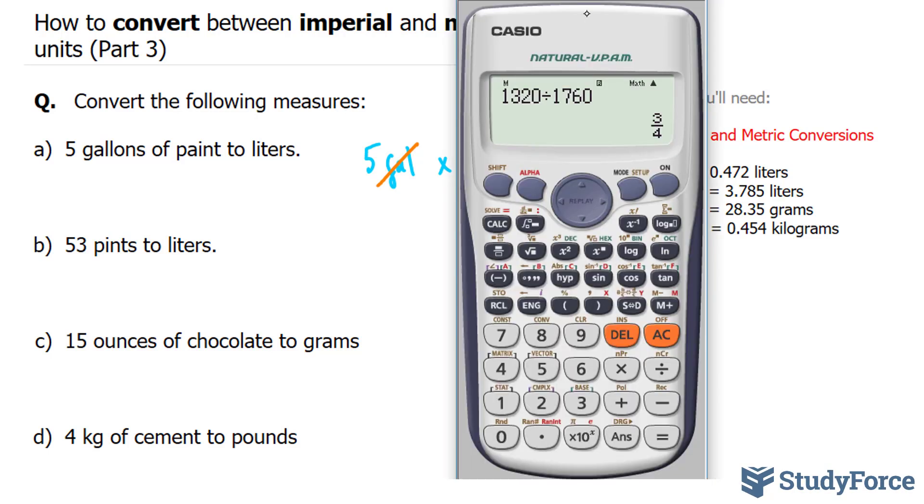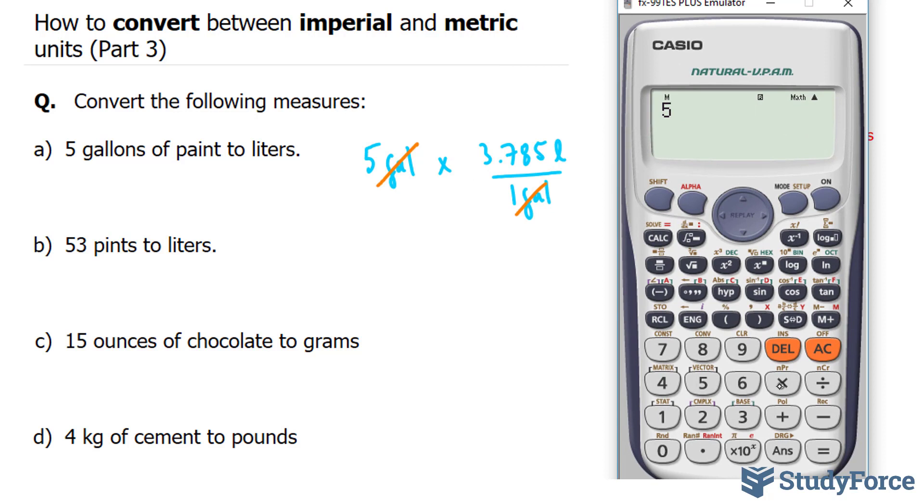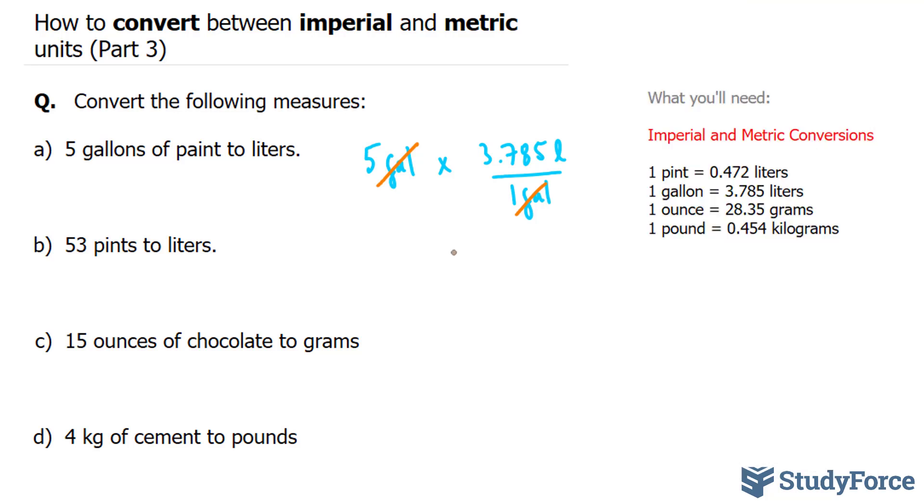So multiplying this together, I end up with 5 times 3.785 and that gets me 18.925, 18.925 liters.